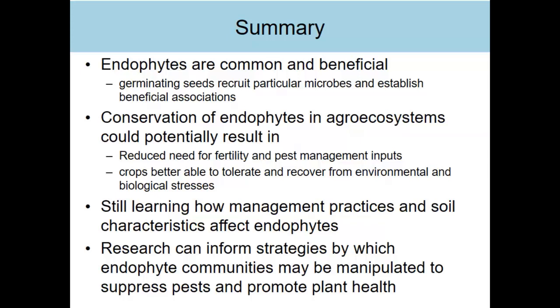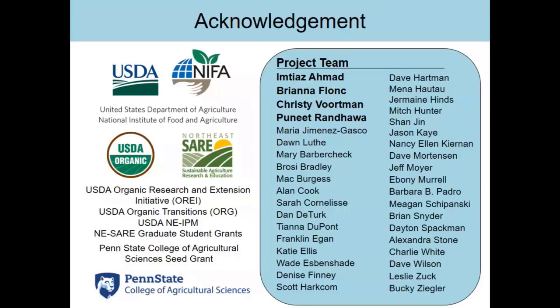In summary, for management and conservation: use rotation since endophytes like some crops better than others — they tend to like corn; winter cover crops can help conserve them due to living roots, though watch the proportion of brassicas and cereal rye; these fungi like soils with good fertility, moisture-holding capacity, and active organic matter; a little tillage is okay to spread spores around; some pesticides are suppressive so we need to be conscious of that. These endophytes are common and beneficial. If we can learn how to reliably harness and conserve them, it could potentially reduce our need for fertility and pest management inputs, make crops better able to withstand environmental stresses, and help suppress pests and promote plant health, especially with our changing climate.